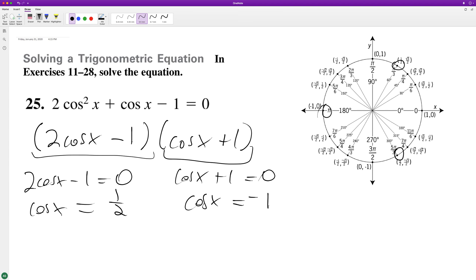So to solve for this, we're going to have x is equal to pi over three plus two pi n, five pi over three plus two pi n, and finally pi plus two pi n.